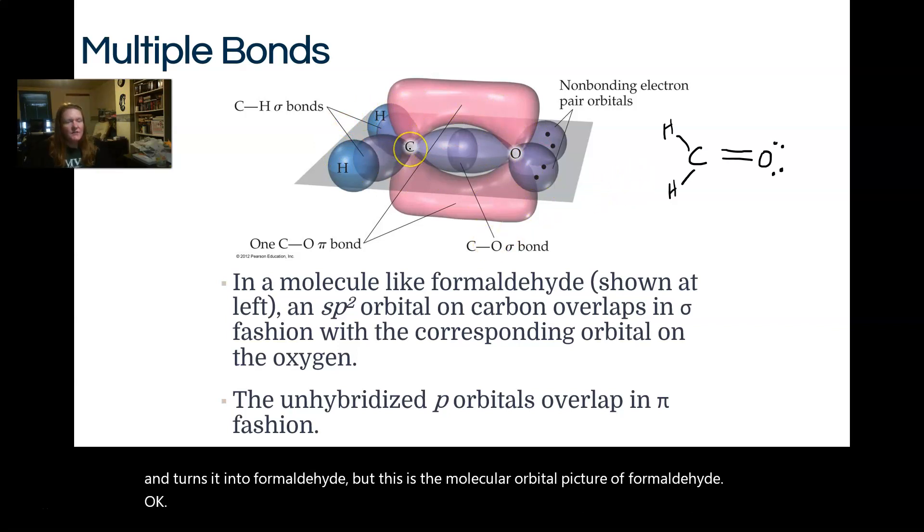But this is the molecular orbital picture of formaldehyde. The hybridization at the carbon would be, it's got three domains involved. Look at the purples. And so we would call that sp2 hybridized, right?